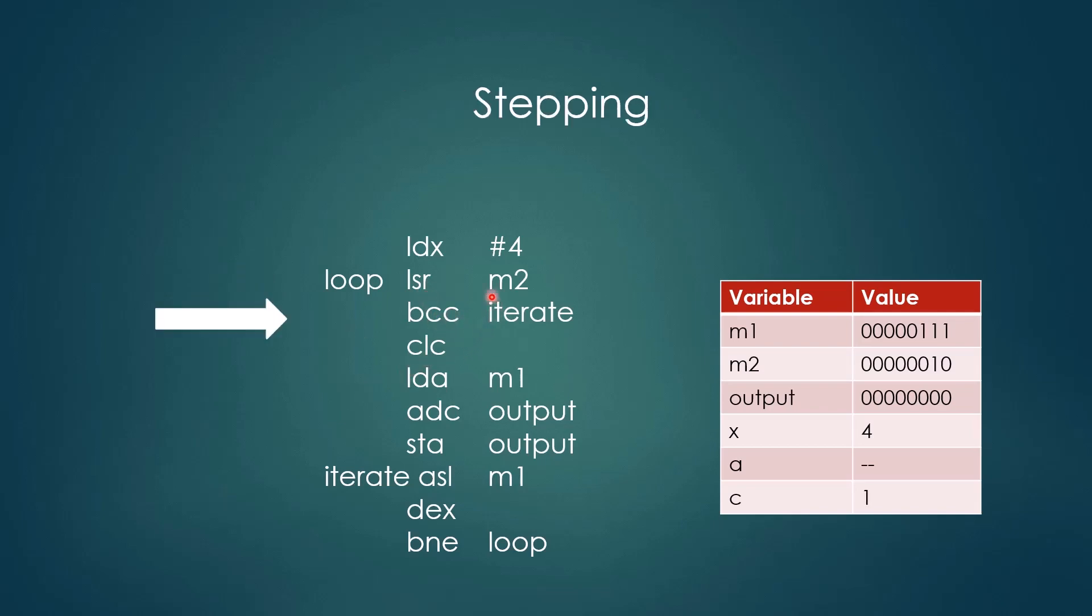So the first thing we do is shift our multiplier one bit to the right into the carry flag. And that's how we'll interrogate each bit of the multiplier. The carry flag is now 1. This instruction is branch on carry clear, and so it'll take the branch if carry is 0, but it'll drop through if it's 1, which is the case here. So here, we're adding the multiplicand to our output. So you see the output changes to 7, binary 0111. Now we're going to iterate our loop, but first we're going to shift our multiplicand left 1 bit.